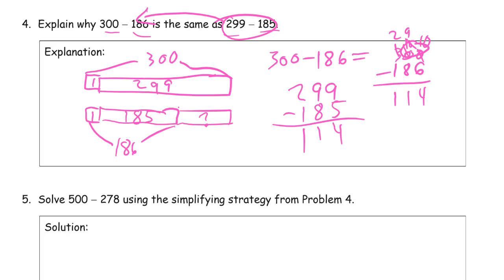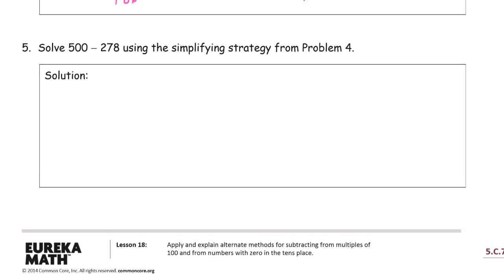But it's a lot easier to do the vertical subtraction. So we're going to use the same simplifying strategy. So that means we're going to subtract 1 from both numbers. There's our minuend. And the 278 is 277. And now I can just subtract those. 9 minus 7 is 2. 9 minus 7 is 2. And 4 minus 2 is 2.